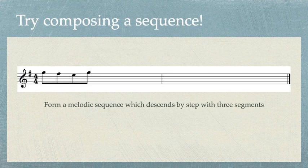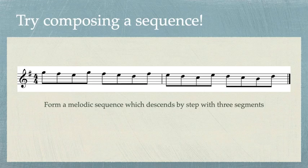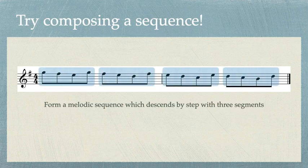Here's a new task. Try composing the remaining segments of this sequence in G major. Make sure that it descends by step and that you have three more segments when you're done. Pause the video if you need more time. You should have written this eighth note pattern beginning on F-sharp, E, and D for the three repeated segments. Each segment takes up a half a measure in this example, whereas in previous examples they have taken up as many as two measures. So we can conclude that the length of the segment doesn't actually matter — only the repetition and the interval of repetition is what makes it a sequence.